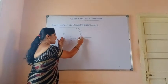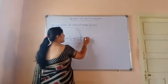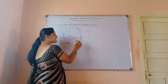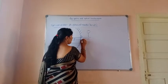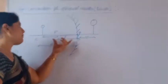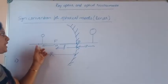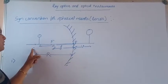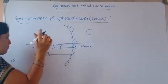We measure this object distance from the pole towards the object. Similarly, the object forms an image, and image distance is the distance between the pole and image, denoted by v. This distance is also measured from the pole. Focal length, radius of curvature, and all distances are measured from the pole. Whatever it may be, all distances must be measured from the pole.